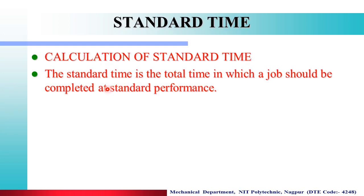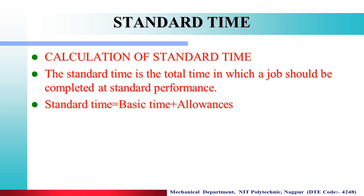Now, calculation of standard time. Standard time is the total time in which a job should be completed at standard performance — meaning the time required when considering all allowances. Standard time equals basic time plus allowances.